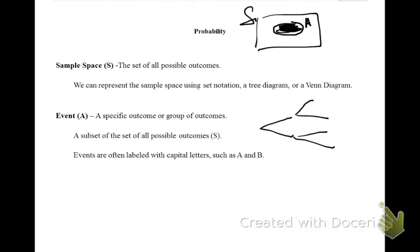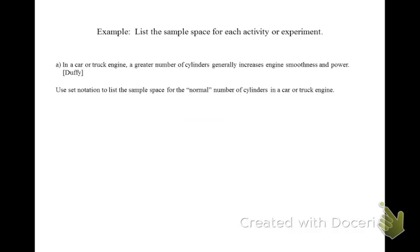The final way to write out the sample space is set notation. Brackets mean a set, and then you list items separated by commas. For example, list the sample space for each activity or experiment. In a car or truck engine, a greater number of cylinders generally increases engine smoothness and power. Use set notation to list the sample space for the normal number of cylinders in a car-truck engine.